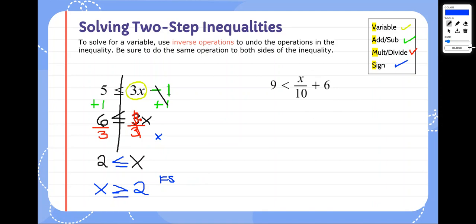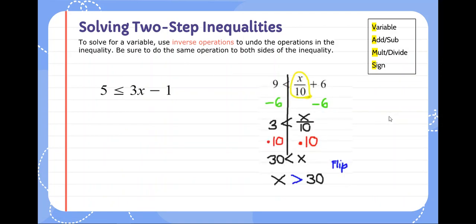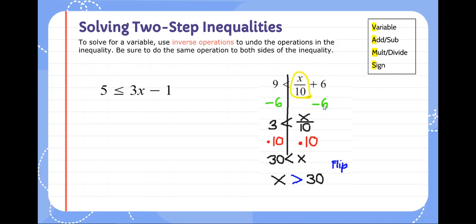Go ahead and try this last problem on your own. Hopefully you found that x is greater than 30. Circling your variable, you see it's on the right, so get rid of the plus 6 by subtracting 6 on both sides. Bring down what's left, then get rid of divided by 10 by multiplying by 10. 3 times 10 is 30, and x is all that's left. You didn't have to flip due to multiplication or division, but when you rewrite it with x on the left, you will need to flip the sign. Good luck with the rest of your inequalities today. Thanks for listening.